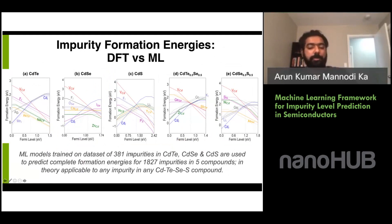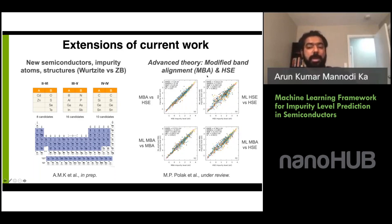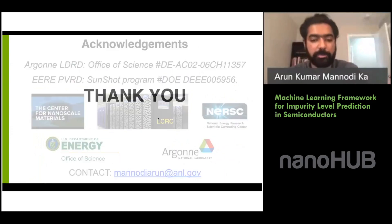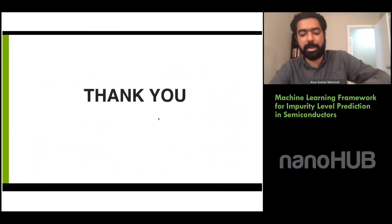We have gone from a dataset of a few hundred impurities to making predictions on almost 2000 new impurities across all compounds. We are currently extending this work from cadmium telluride/selenide/sulfide to many more two-six, three-five, and four-four semiconductors, with more impurities and using advanced theories like modified band alignment and hybrid HSE functionals. Thanks for an excellent workshop, Arun. Now let's open the floor for questions.